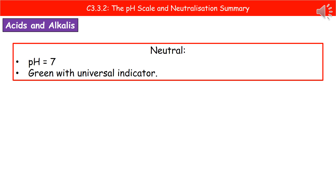The last one is the same as we learned at key stage 3: neutral solutions. They've got a pH of 7 and if we add universal indicator, they go green — exactly the same as we learned all the way back in year 7. At least there are some things that don't change.